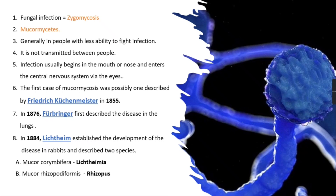Infection usually begins in the mouth or nose and enters the central nervous system via the eyes. Once a person is infected with this black fungus disease, the infection is first seen in the region of the mouth or nose, and once it spreads completely in your body it will enter into the central nervous system, which is present in your brain.